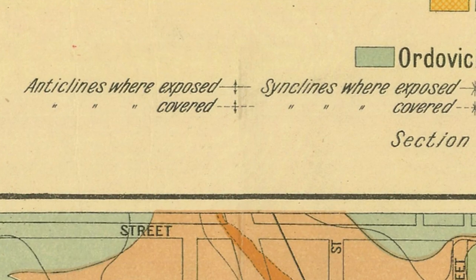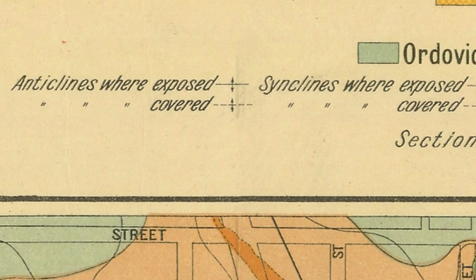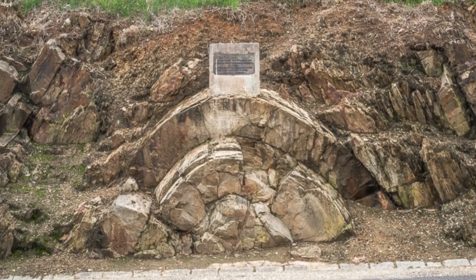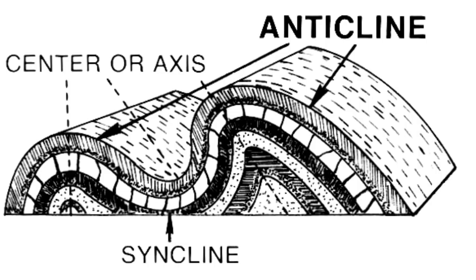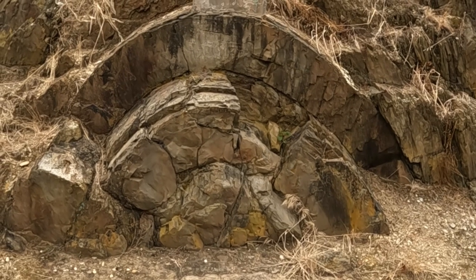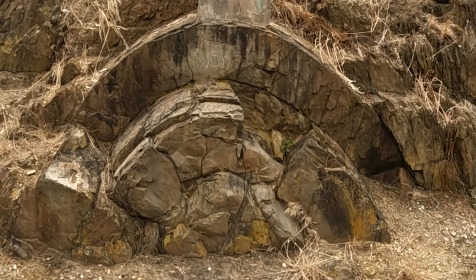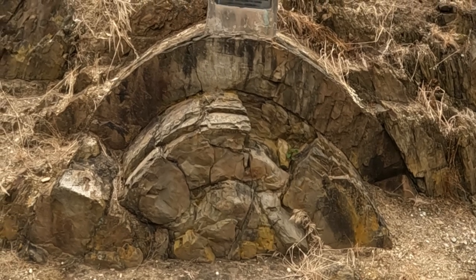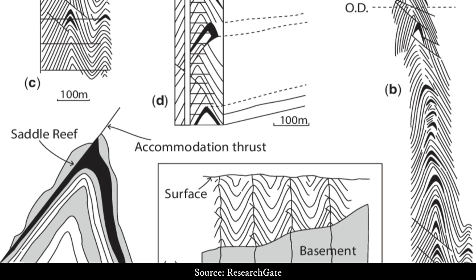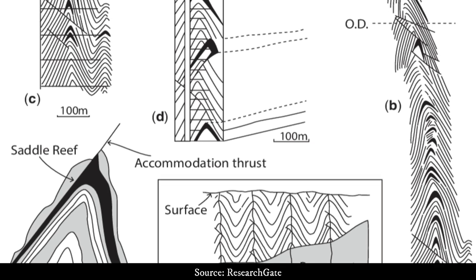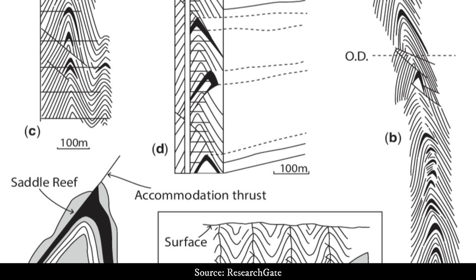You'll also find anticlines and synclines marked on maps. These terms refer to arch-like folds in the rock layers. A syncline is a fold where the youngest rocks occur in the core, while in an anticline it is the oldest rocks which occur in the core. Here is an amazing example of an anticlinal fold exposed in a road cutting in Castlemaine. A saddle reef is a mineral deposit associated with the crest of an anticlinal fold and following the bedding planes.